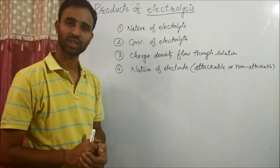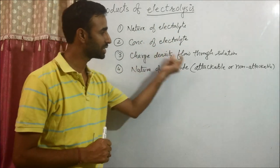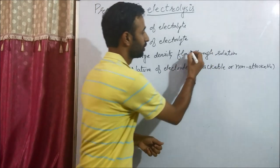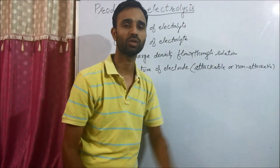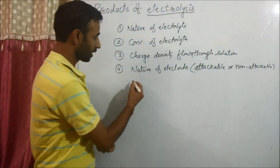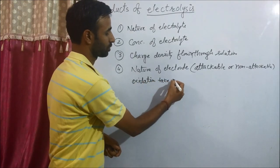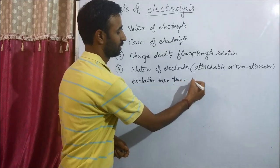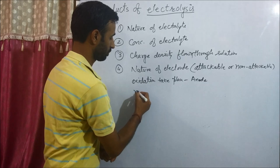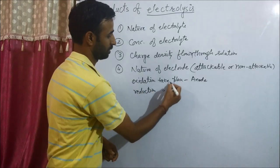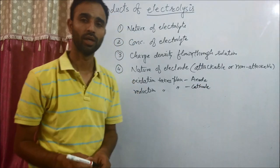These are the four criteria to decide the product: nature of electrolyte, concentration of electrolyte, charge density flown through solution, and fourth is nature of electrode — attacked or non-attacked. Electrodes: oxidation takes place at anode, and reduction takes place at cathode.